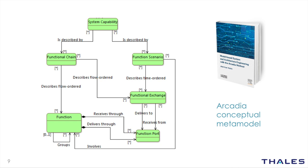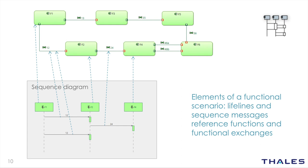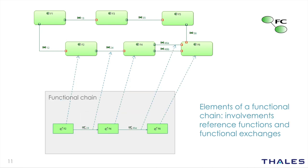Before doing a quick overview of how functional chains are implemented in Capella, here is a quick view of the conceptual description provided by Arcadia. A system capability is described by functional chains and scenarios, referencing functions and functional exchanges — meaning that functional chains and scenarios are pretty close conceptually. In a sequence diagram, the top shows the data flow — all the functions and connections — and the sequence diagram represents one example of orchestration between these functions and functional exchanges.